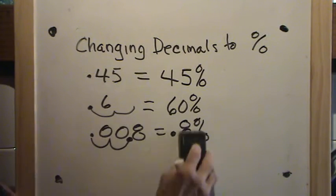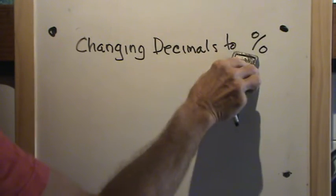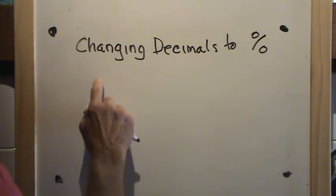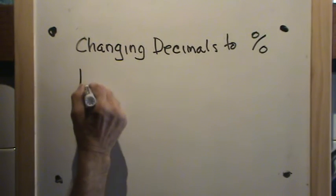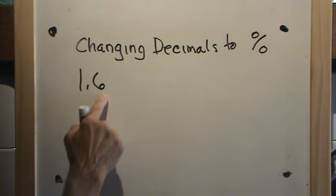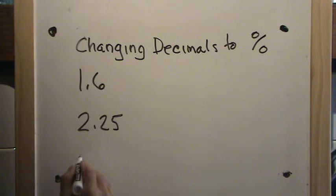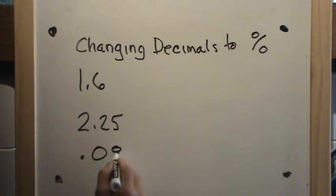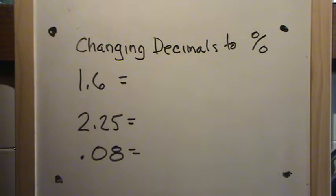This is a simple rule: to change a decimal to a percent, you move the decimal point two places to the right. Let's try these problems: suppose we had one and six-tenths, two and twenty-five hundredths, and eight-hundredths. Let's change these to percent. Put your video on pause, work these problems in your notebook or on a piece of paper, then turn the video back on and we'll go over them.